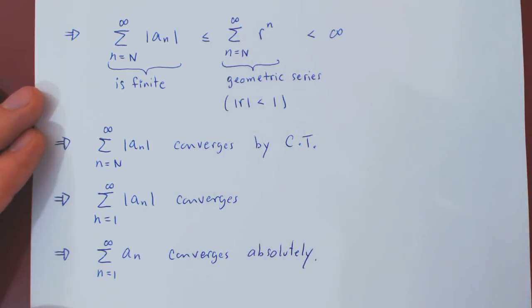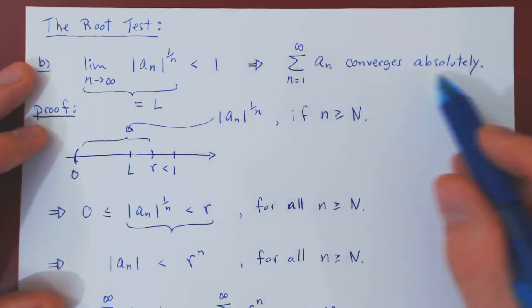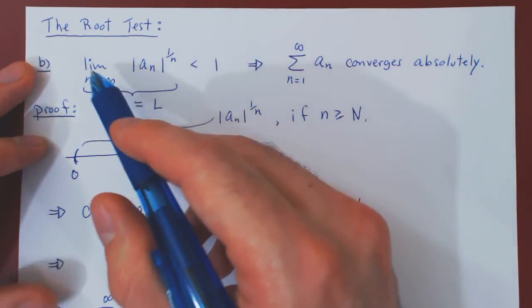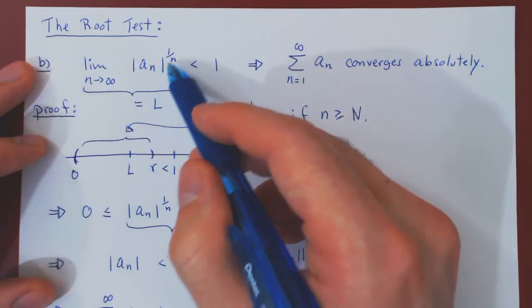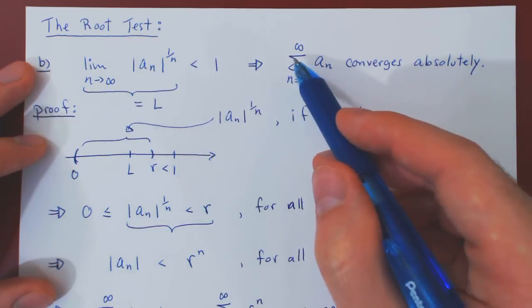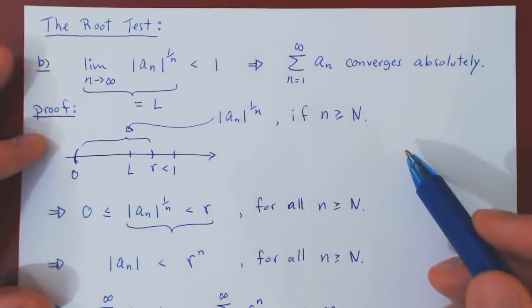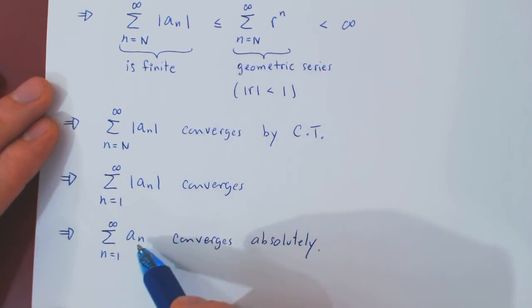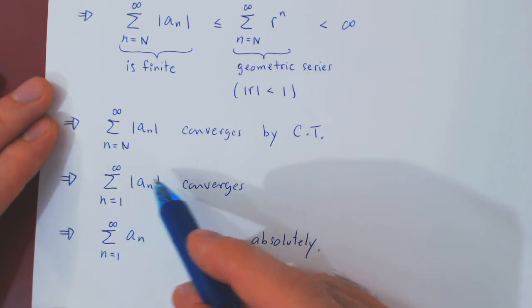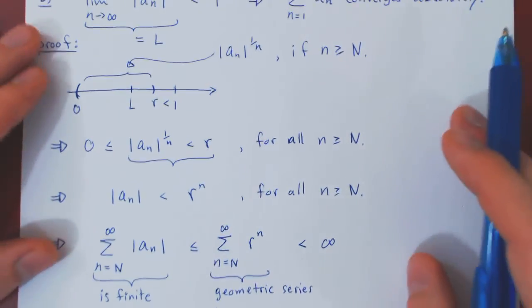Which completes our proof. So we have just proved that if the limit as n tends to infinity of the nth root of |a_n| is strictly less than 1, then the series of a_n from 1 to infinity does converge absolutely. Which, of course, means that the series converges, but the series of the terms in absolute value also converges.